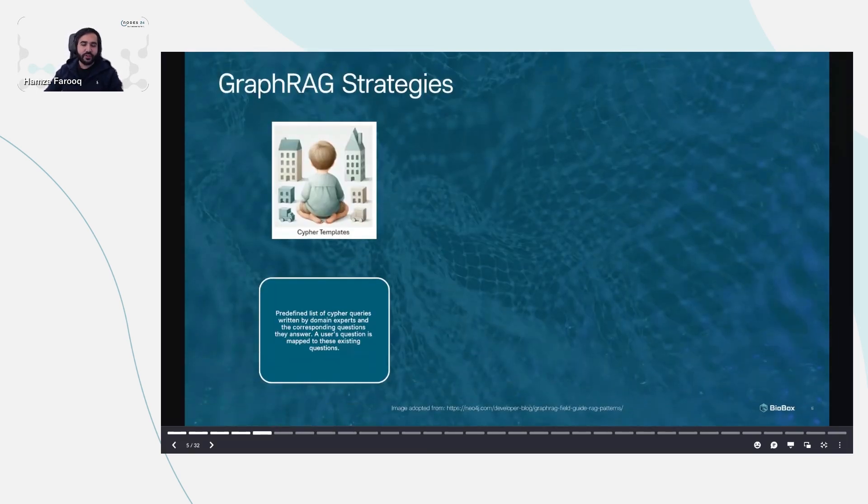Now with the basics of GraphRAG in place, there are a few different ways to implement GraphRAG, as discussed by Elena Coley in her blog post linked below. I highly recommend reading that. The first method is cipher templates. Cipher templates use predefined queries written by domain experts, allowing the LLM to map user questions directly to these fixed templates. It's effective when the types of questions are predictable, but limited when queries fall outside these templates. This approach is reliable but lacks flexibility, akin to working with ready-made toys with fixed forms.